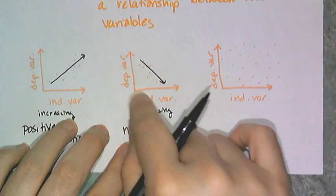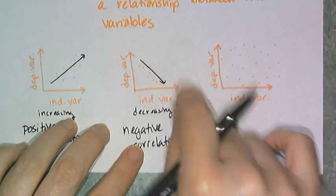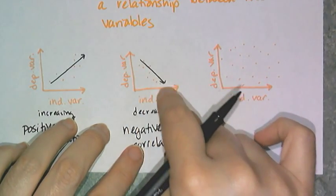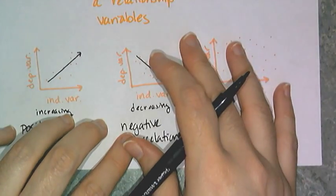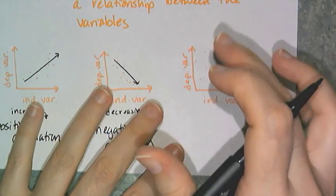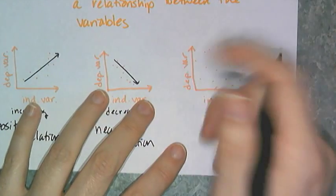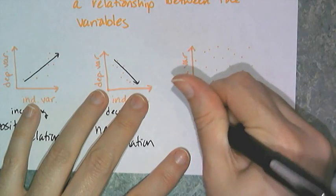So an example of data that's negatively correlated could be something like the longer you are on the calculator, the less battery life there is in the calculator. Now over here we seem to have randomness, so when the data points are all random and just sort of looks like they've just been sprinkled on there, then we say there is no correlation.